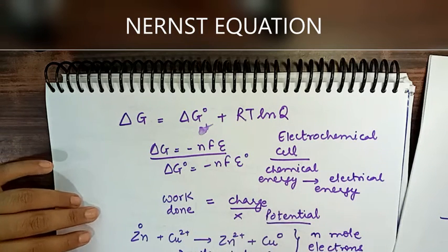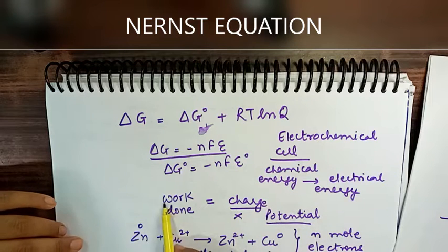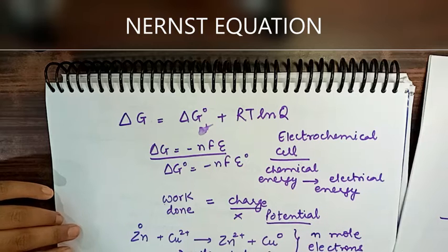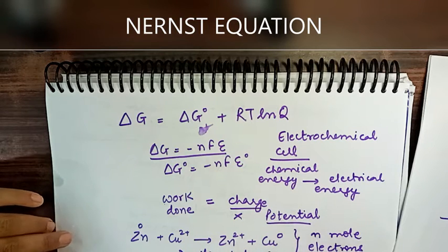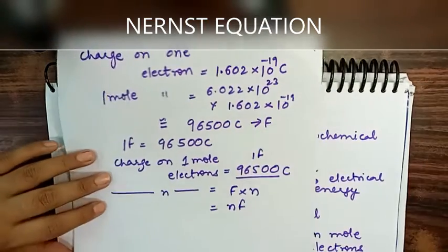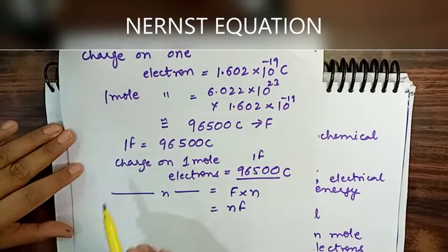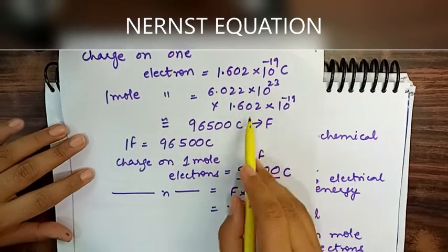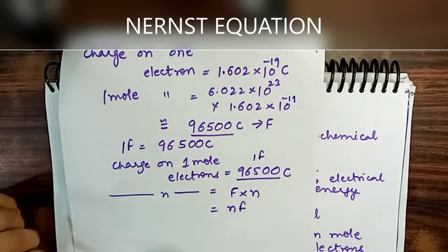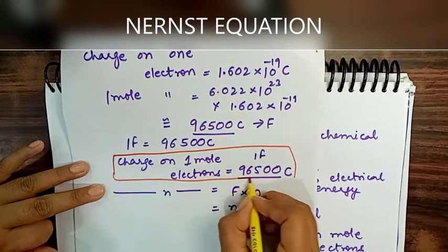The electrochemical cell does work. Work done by the cell equals charge multiplied by potential. The charge transferred is nF. When the cell does work, its energy decreases — so work done equals the decrease in free energy, giving us the minus sign.